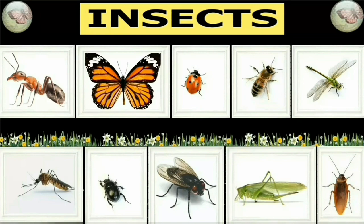Next question: which insect eats grass and hops? Answer is grasshopper. Next question: which insect makes honey? Answer is honeybee. Honeybee makes honey.